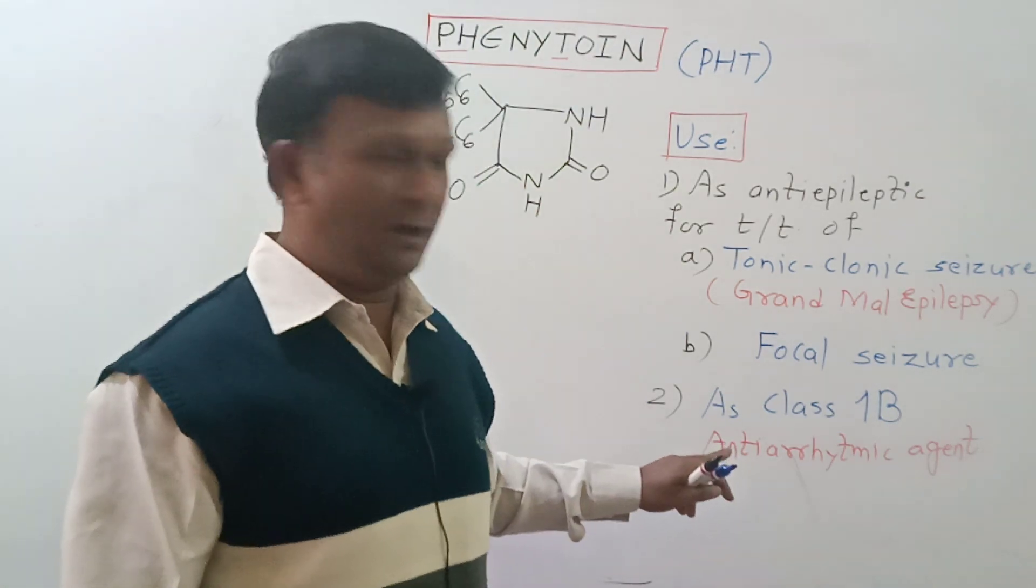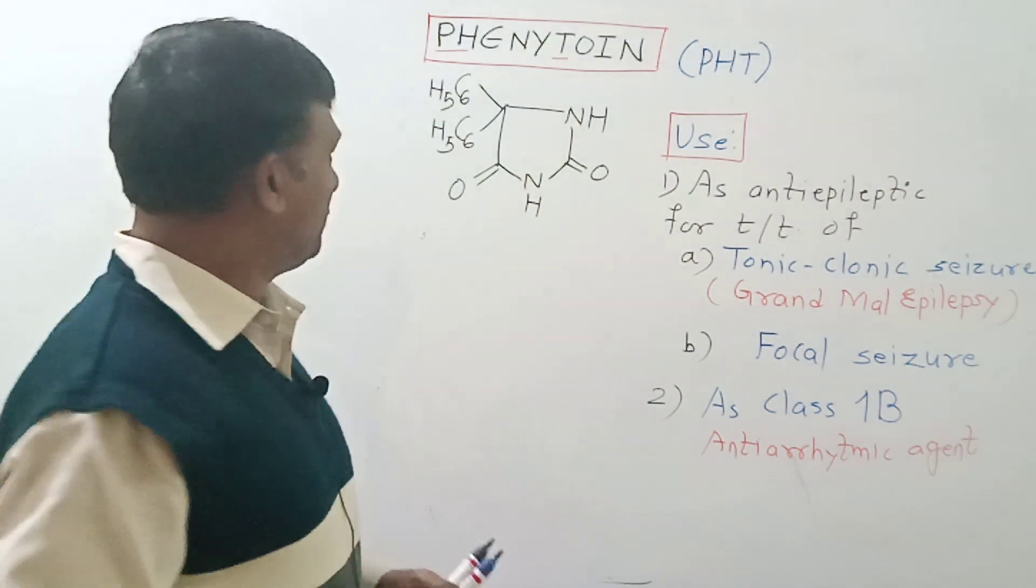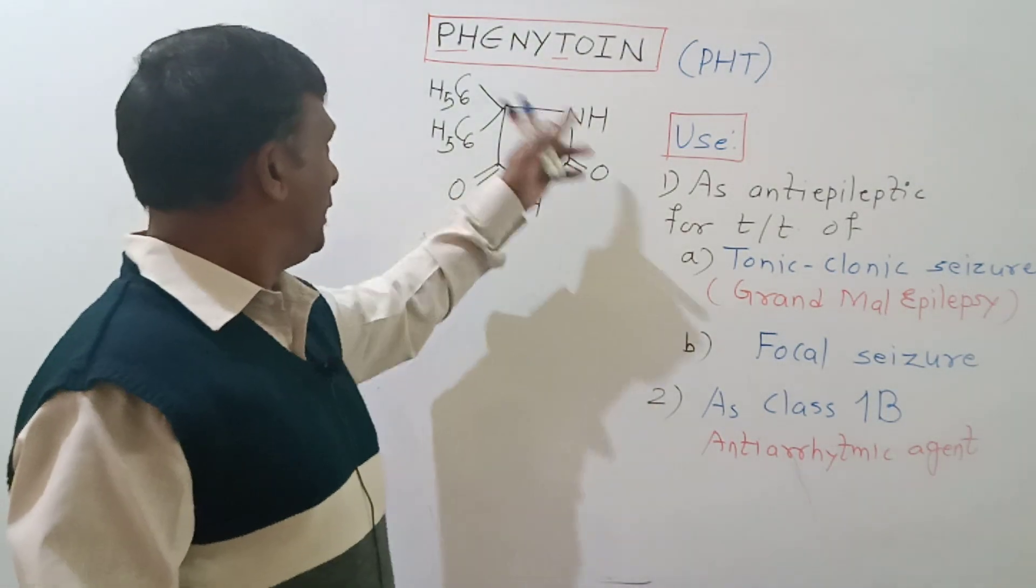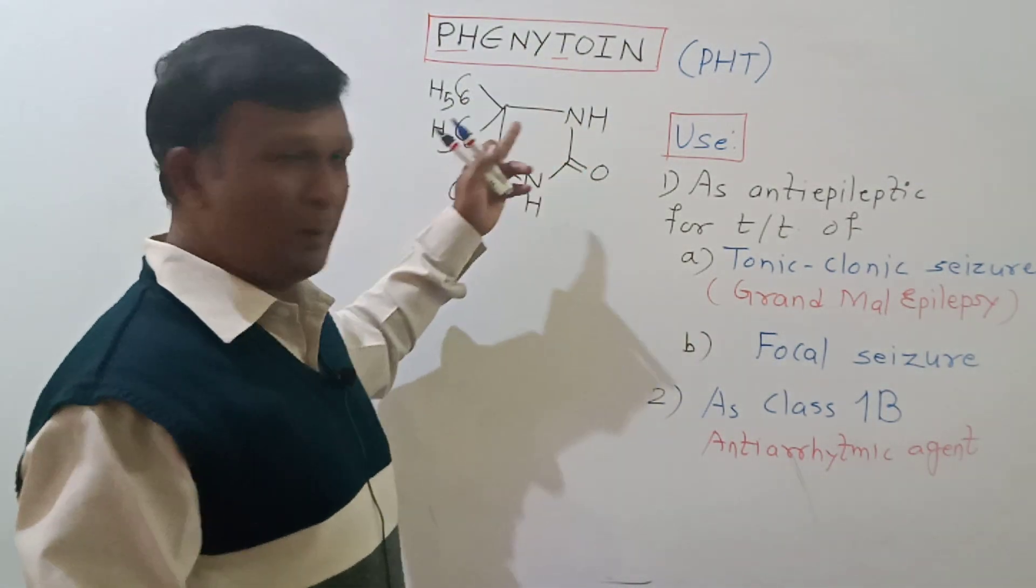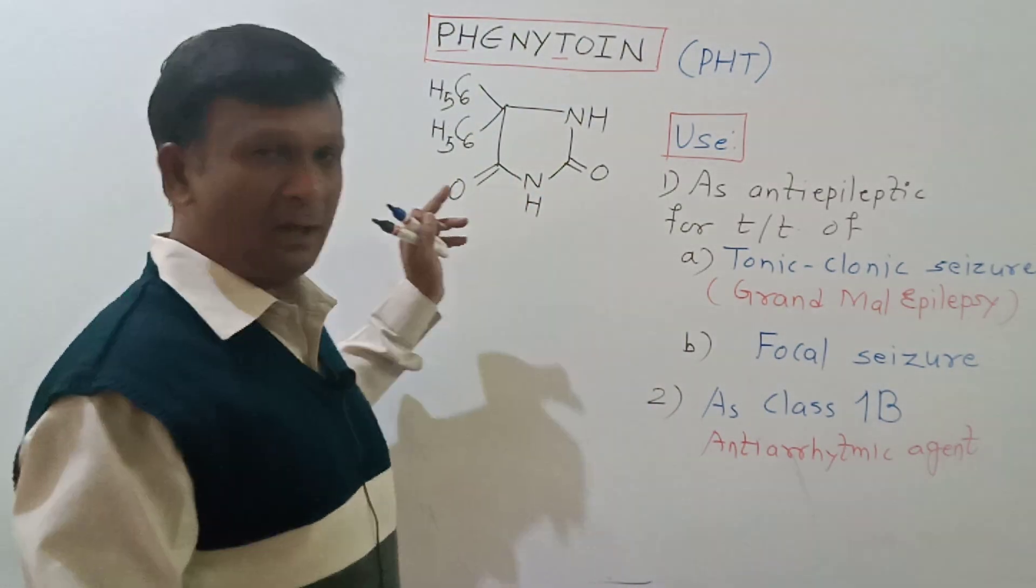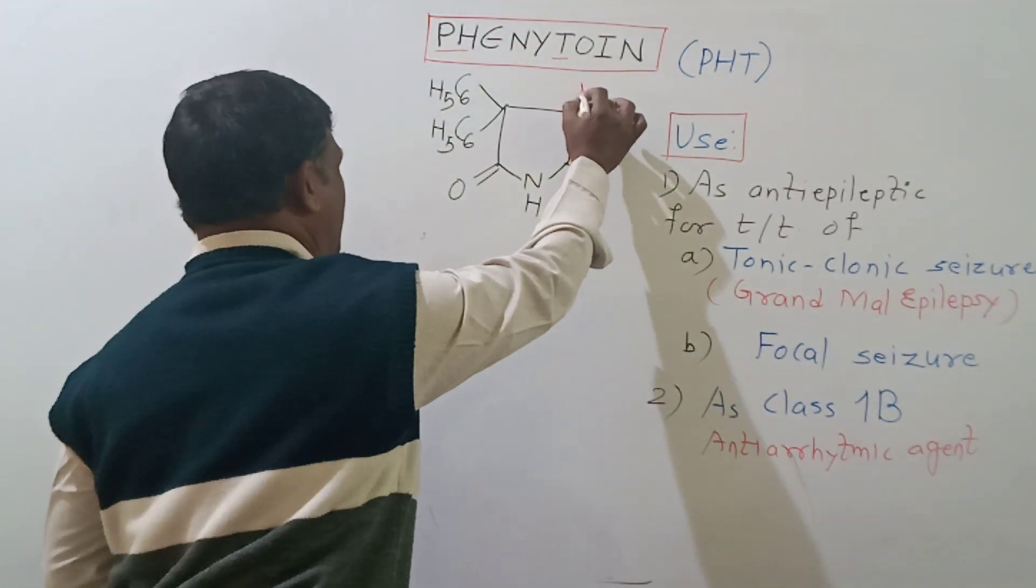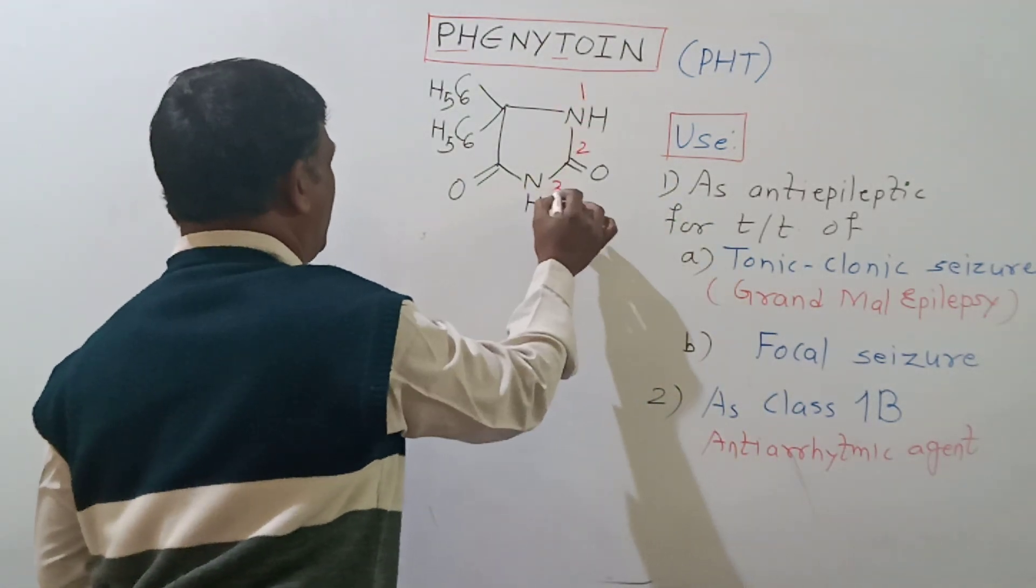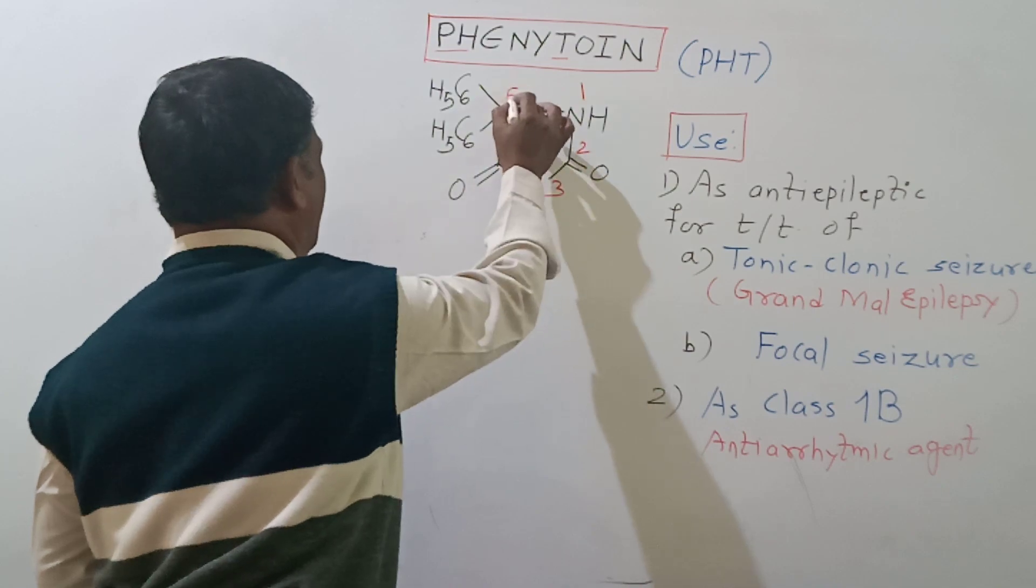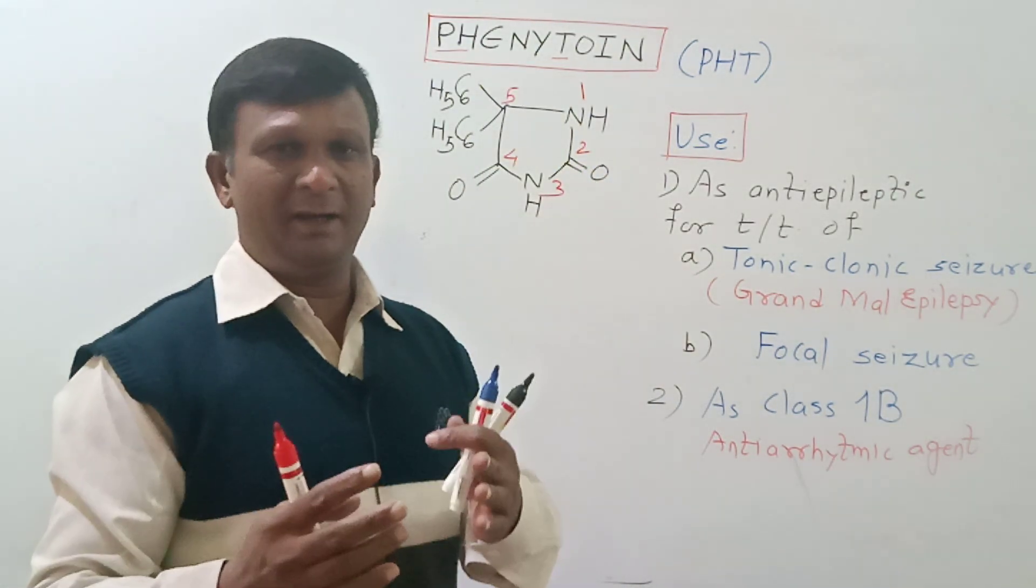Now let's look at the IUPAC name of this compound. Here we find a five-membered heterocyclic ring. Though it is a heterocycle, our numbering will start with this nitrogen: number one, two, three, four, and five. The nomenclature can be given in two ways.